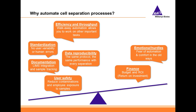So why do people automate cell separation processes? The main reason most people automate their lab is for improved efficiency and higher throughput. This gives you time to work on other high-priority tasks that cannot be automated. But automation isn't just about higher throughput — it's also about standardization, less user variability, and fewer human errors in your workflows. Data reproducibility is also really important: you have the same protocol every time, and so you get the same performance with every separation.